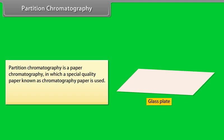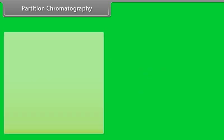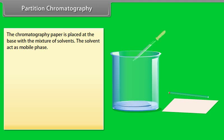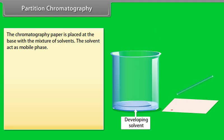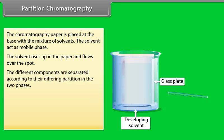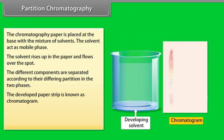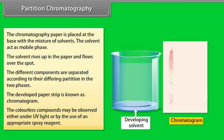Partition chromatography is a paper chromatography in which a special quality chromatography paper is used. The chromatography paper contains water trapped in it, which acts as the stationary phase. The paper is placed with a mixture of solvents, which act as the mobile phase. The solvent rises up in the paper and flows over the spot. The different components are separated according to their differing partition between the two phases. The developed paper strip is known as the chromatogram. Colourless compounds may be observed under UV light or by using an appropriate spray reagent.